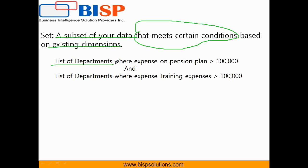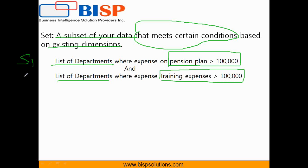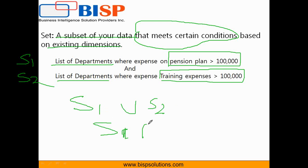I'd like to find a list of departments where my expenses on pension plan are above one hundred thousand. I also like to find a list of departments where my expenses on training are above one hundred thousand. So I'm creating two sets: set one is the list of departments where pension plan expenses are more than one hundred thousand, and the second set is the list of departments where training expenses are above one hundred thousand. Later on I'm going to apply union, intersection, or minus on these two sets. Let's get started.